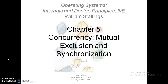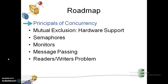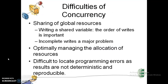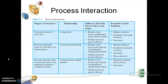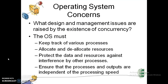So those are the factors that can give rise to concurrence. The first one is multiple applications, the second is structured applications, and the third is the operating system structure. You also have to understand what are the things that help a computer to do execution concurrently, because we have talked about concurrence — so how is a computer able to do this?